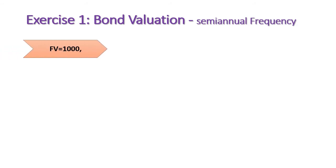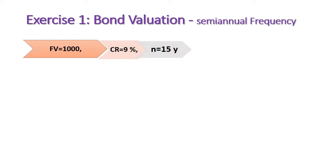Let me show an exercise about bond valuation using semi-annual frequency. Suppose we have a bond with a face value of 1,000 Egyptian pounds, providing a 9% interest rate over the next 15 years. Investors in the market require an 8% rate of return to invest in this bond. Find the bond value.